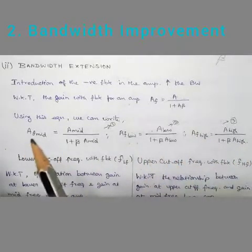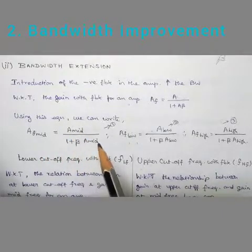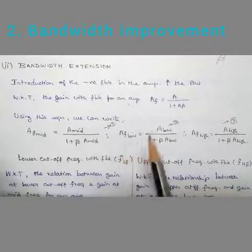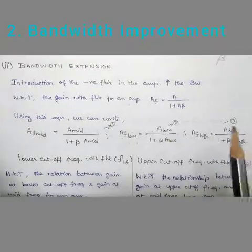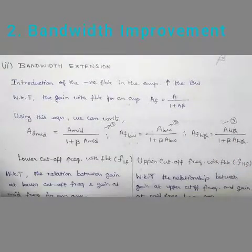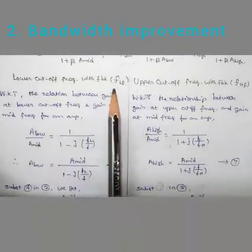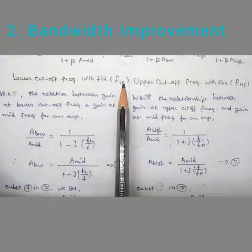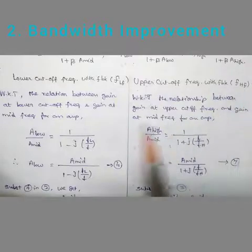For mid frequency: AF_mid equals A_mid divided by (1 plus beta·A_mid) — equation one. For low frequency: AF_low equals A_low divided by (1 plus beta·A_low). For high frequency: AF_high equals A_high divided by (1 plus beta·A_high). Next, we find the lower cutoff frequency with feedback (f_LF) and the upper cutoff frequency with feedback (f_HF).